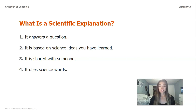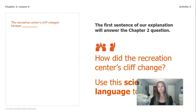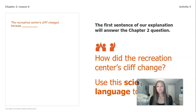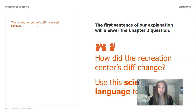The first sentence of our explanation will answer our chapter two question. Our question was: how did the recreation center's cliff change? We're going to be using scientific language or scientific vocabulary to discuss this, and we're already going to be starting off with a sentence stem: 'The recreation center's cliff changed because blank.'